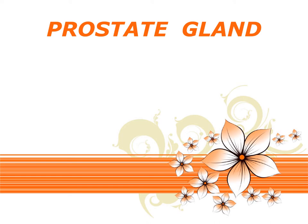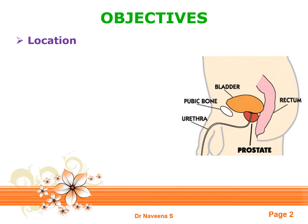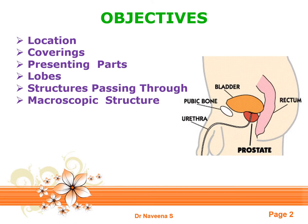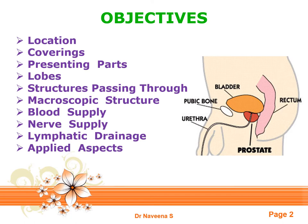Welcome to this video tutorial on gross anatomy of the prostate gland. The objectives for this topic include: general features and location of the prostate gland, coverings of the gland, presenting parts and their relations, lobes of the gland, structures passing through it, macroscopic structure, blood supply, nerve supply, lymphatic drainage, and a few applied aspects.